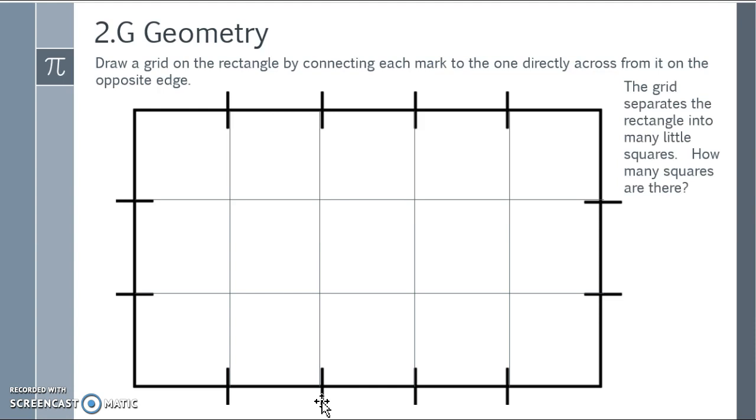The grid separates the rectangle into many little squares. How many squares are there? Well, I can count them. There's 1, 2, 3, 4, 5, 6, 7, 8, 9, 10, 11, 12, 13, 14, 15 little squares.